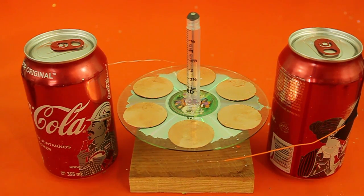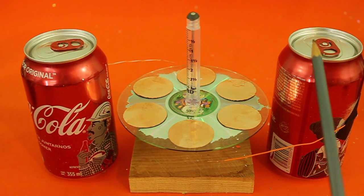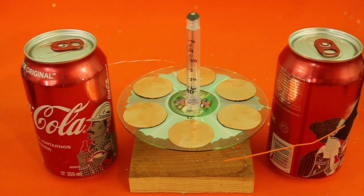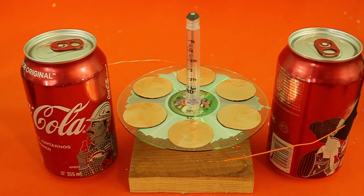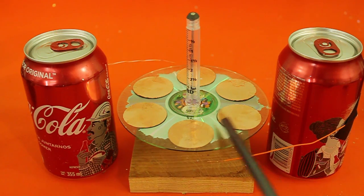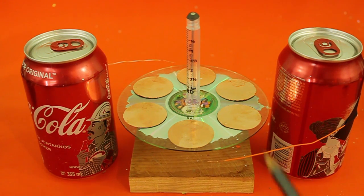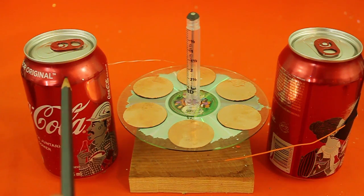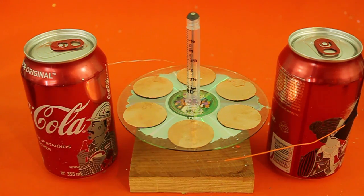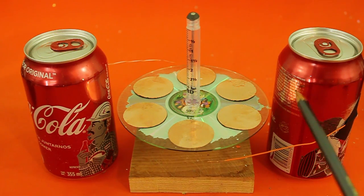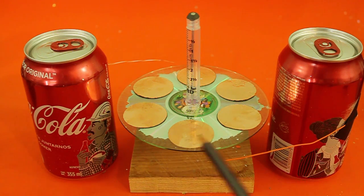Equal charges repel and different charges attract. Remember that this can is connected to the positive terminal and this one to the negative terminal. Since we are dealing with very high voltage, we have electrostatic induction. So, the copper disks that are close to the positive can and the wire will be positively charged. And those close to the other can and wire will be negatively charged.